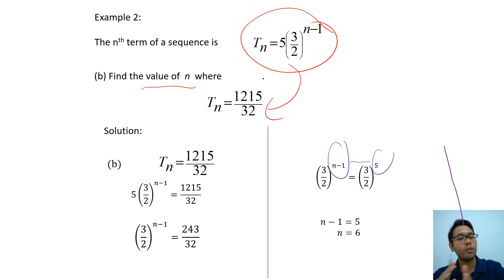Please make sure if the question asks you to prove, you must do it in this way. You cannot do T2 divided by T1. Same goes for AP. You cannot do T2 minus T1. It's only this way.